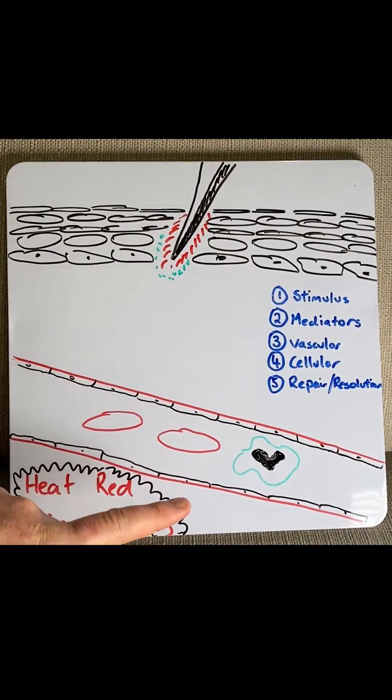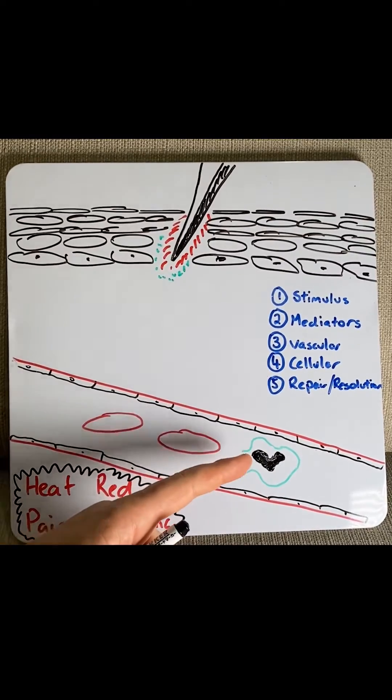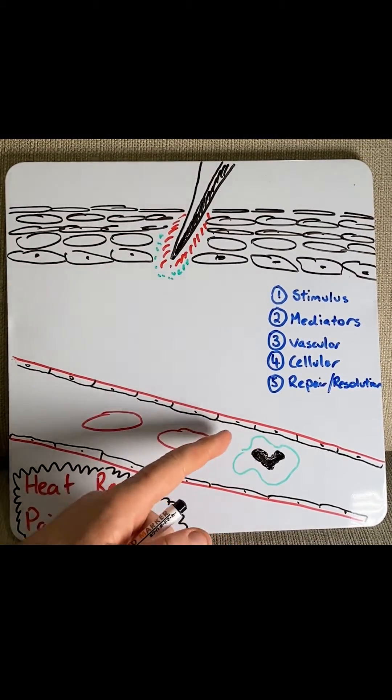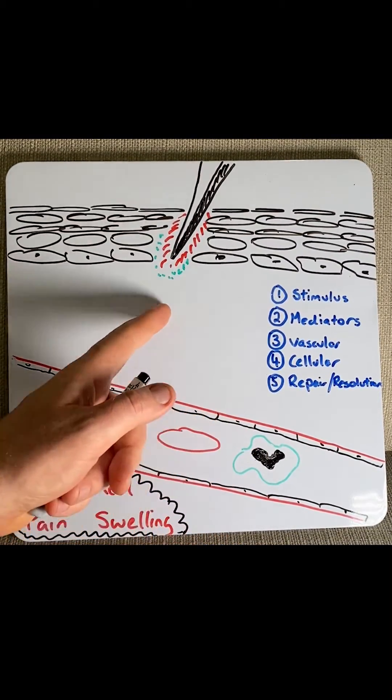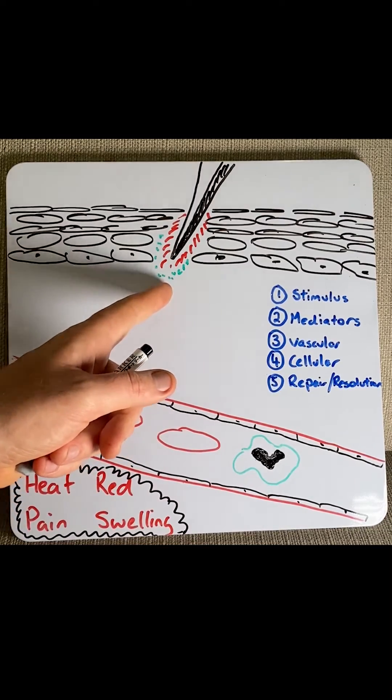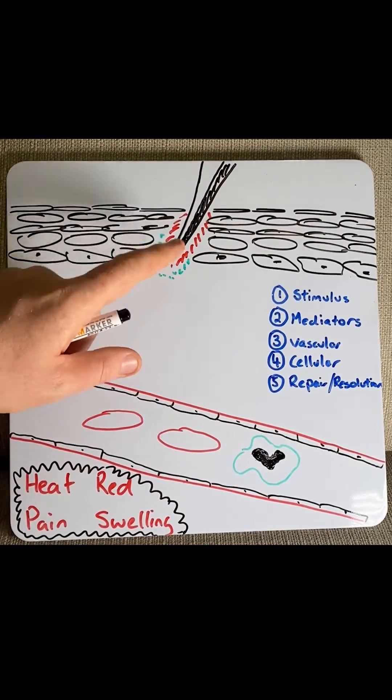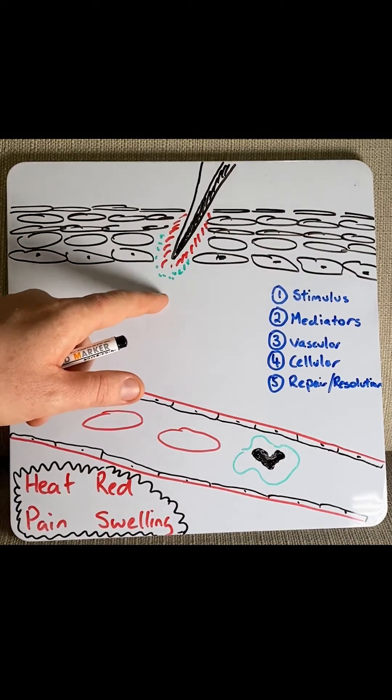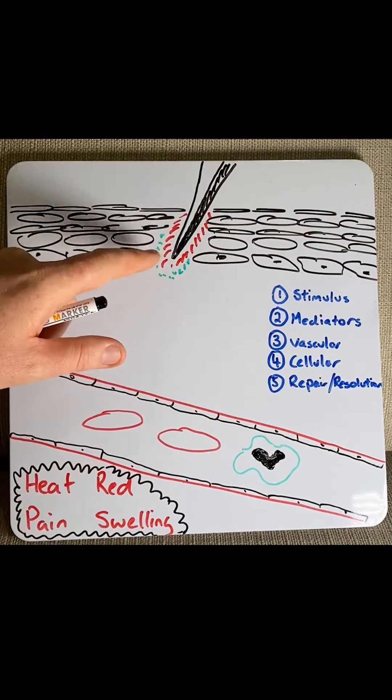In acute inflammation this would be neutrophils and macrophages. They move out of the blood vessels and migrate to the site of injury. Here they phagocytose or eat up damaged cells or certain pathogens and clear the area away.